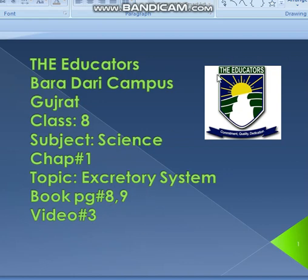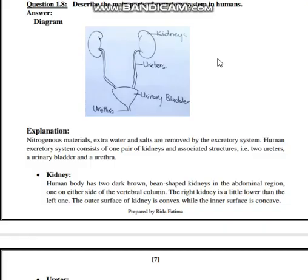Open book page number 8, human excretory system. This question is also given in your exercise as question number 1.8: describe the main parts of the excretory system in humans. First of all, we will discuss what the excretory system is, and then we will discuss its main parts.